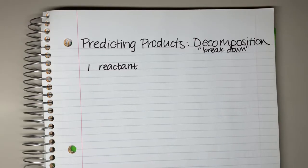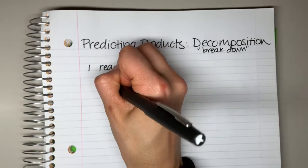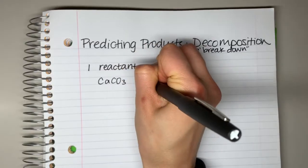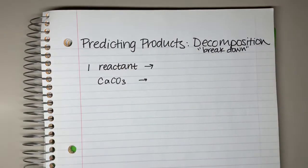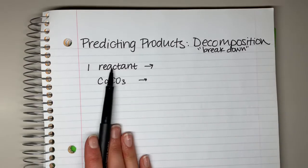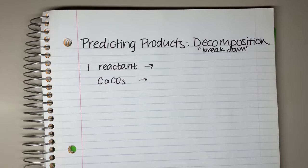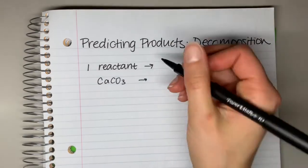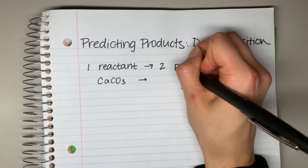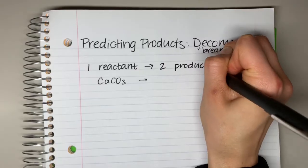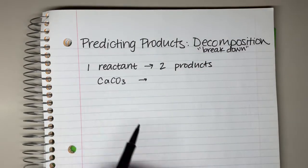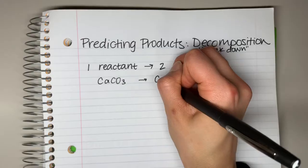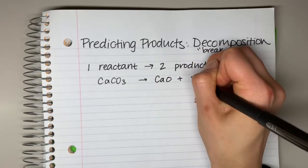For a practice problem, let's say that it is calcium carbonate. This is what it might look like. It's very obvious that it's decomposition because it's going to have just one reactant — it's the only reaction type that starts with one thing. We are going to break this down into multiple products; in our case, we'll stick to two different products. So this is going to break down into calcium oxide and carbon dioxide.